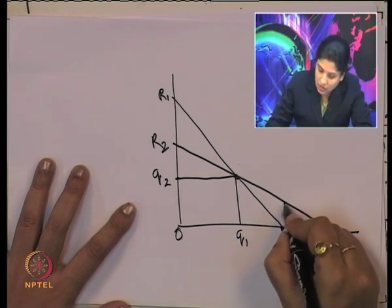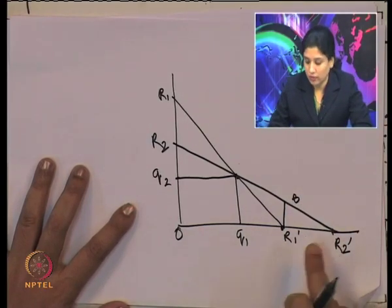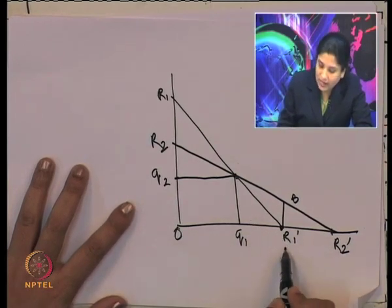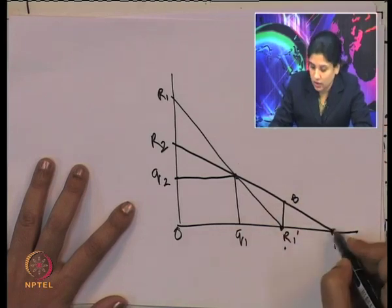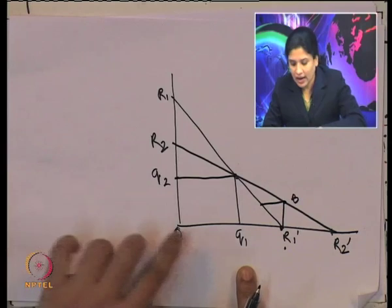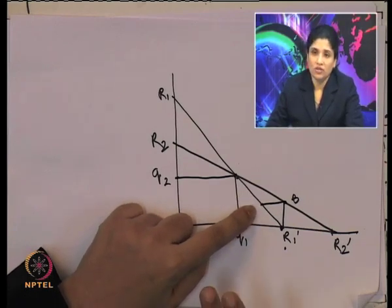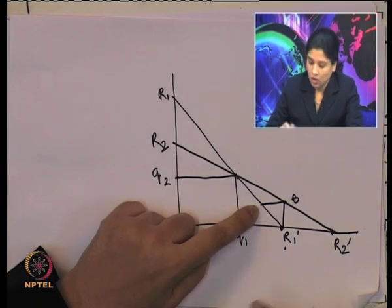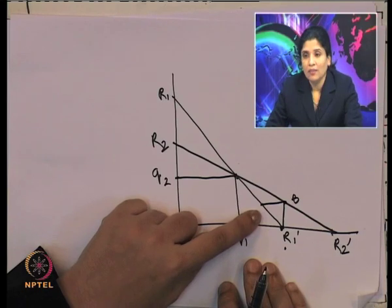If A is producing a certain amount, corresponding to this B will produce on its reaction curve R2. Corresponding to B's choice, A will again react and choose a combination on reaction function R1. The reaction function gives the different Q1 and Q2 combinations where profit is maximum — whether B chooses any combination on reaction function 2, A chooses any combination on reaction function 1, and both ideally maximize profit.